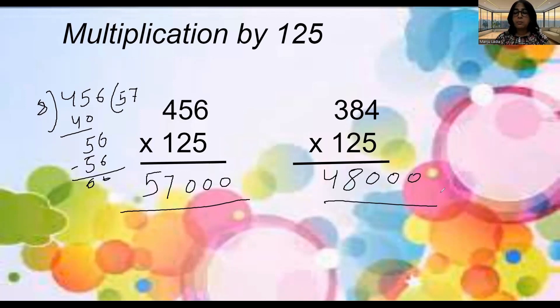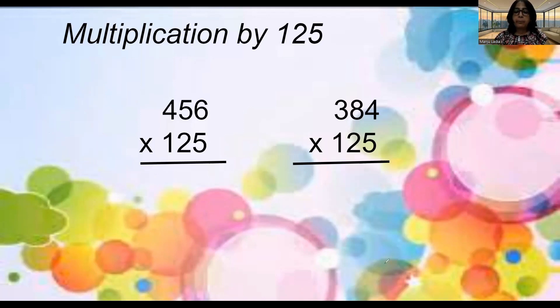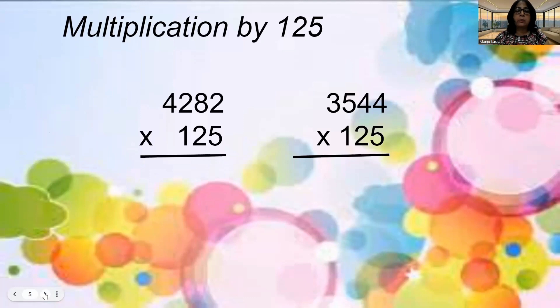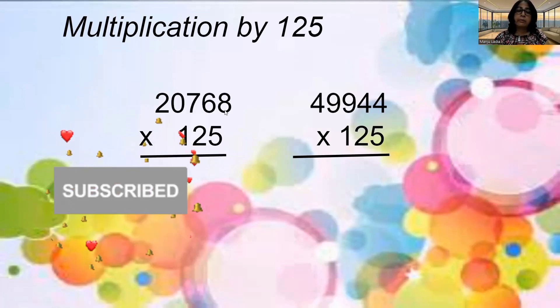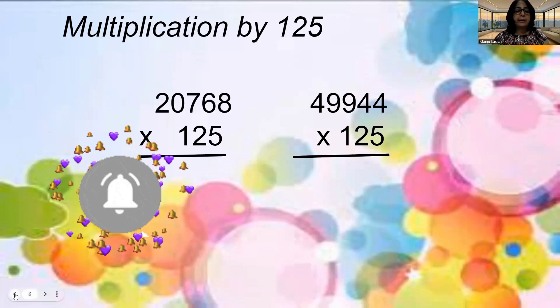You can do much more multiplication by 125 by just dividing any number by 8. You can do the practice much more. You can take an example from here. You can do the 4-digit multiplication by 125. And like that only - just divide this number by 8 and add three 0's. Again, 4-digit number also. You can divide this number by 8 and add three 0's. It is too simple. Just do the practice more and more.